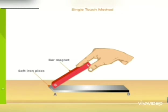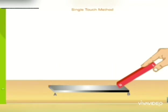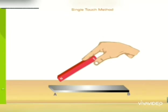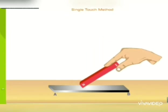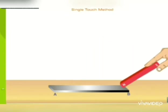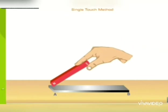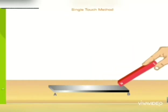Without lifting, move the lower end of bar magnet along the whole length of iron bar till you reach its other end B. Magnet ka ek end haath mein pakarke, dusra end iron bar ka ek end A ke upar rakhna hai.